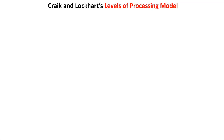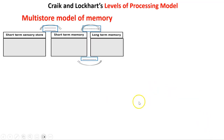The multi-store model of memory basically said that we have three stores through which information passes. We had a look at the short-term sensory store — when unlimited information comes in for up to one second, we use selective attention to filter the relevant information into short-term memory and filter out the irrelevant. Once we have information in short-term memory, we can take in somewhere between five and nine pieces of information, and that will last for 30 seconds.